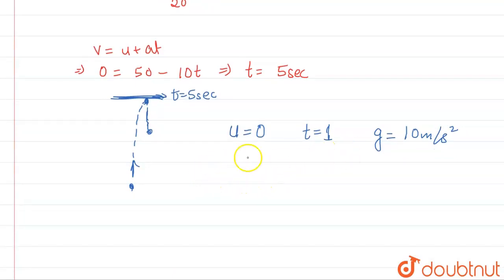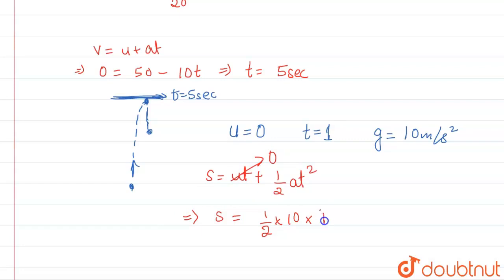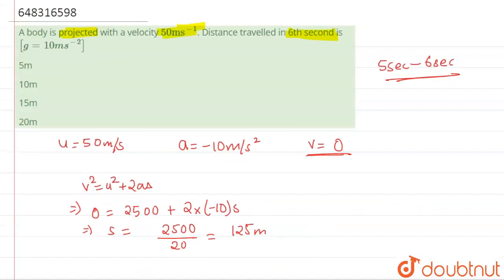We use the second equation of motion: S = UT + ½AT². With U = 0, the UT term becomes zero. Half of A (10) multiplied by T² (1²) gives S = 5 meters. So our answer is clearly option A, that is 5 meters.